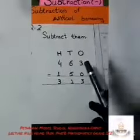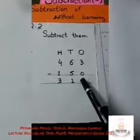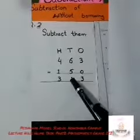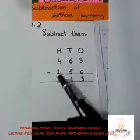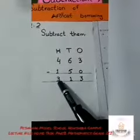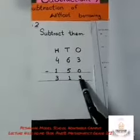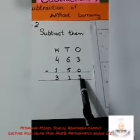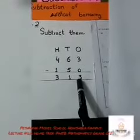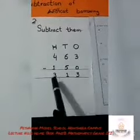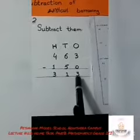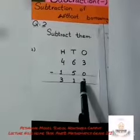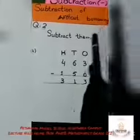3 minus 3 is equal to 0, 6 minus 5 is equal to 1, 4 minus 1 is equal to 3. The answer is 313. Students, remember: the answer of subtraction is called the difference.